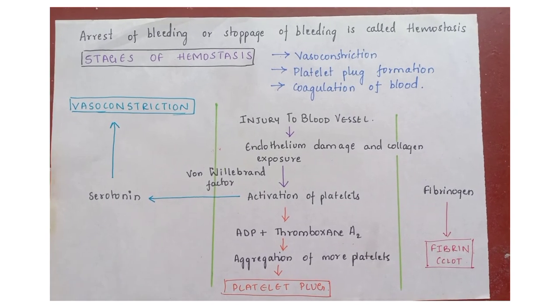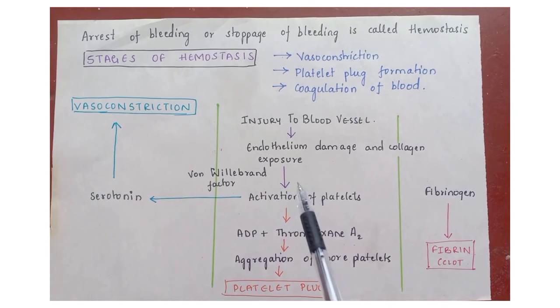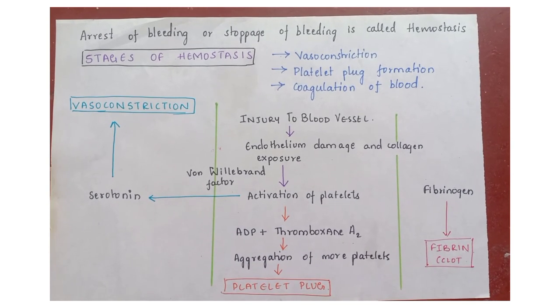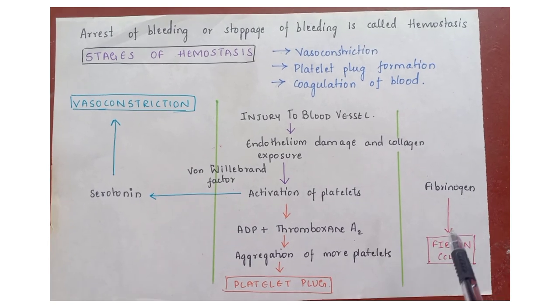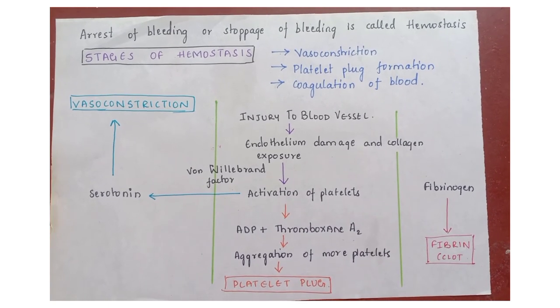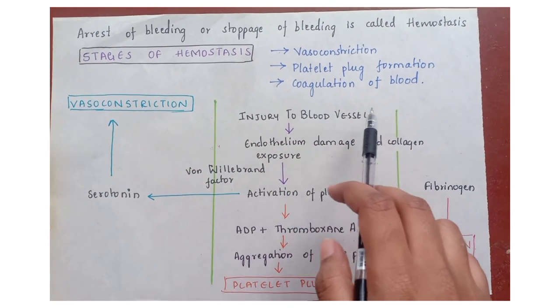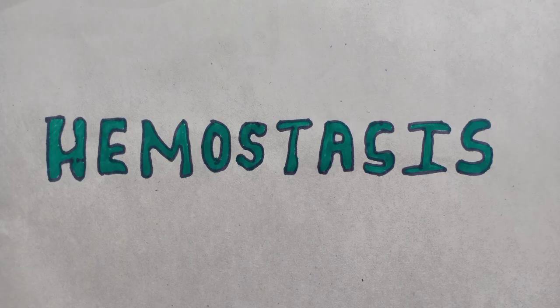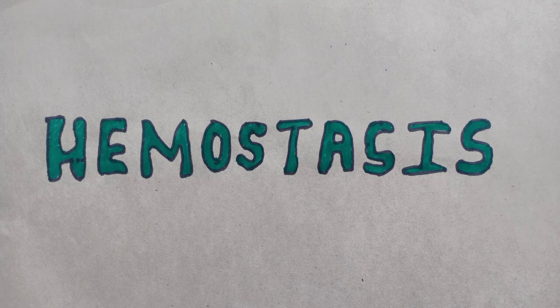That activation of platelets causes serotonin secretion and vasoconstriction, which in turn secretes ADP and thromboxane A2, causing platelet plug formation. In coagulation of blood, fibrinogen is converted to fibrin. So hemostasis is the stoppage of bleeding and has 3 stages: vasoconstriction, platelet plug formation, and coagulation of blood. We will study it in detail in the next chapter.